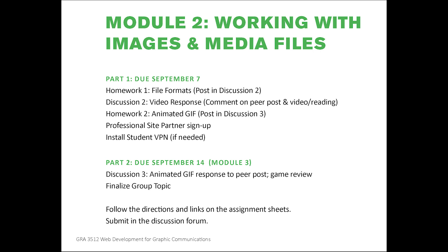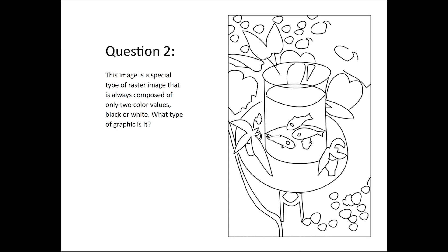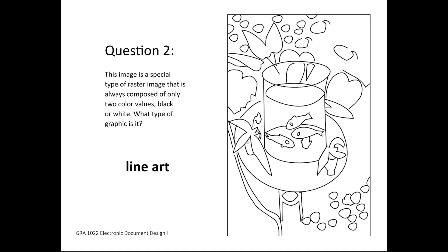First, I want to talk a little bit about image pixels and image size. This picture, for example, was an image I took with my smartphone, captured automatically at 72 PPI, making it a raster image — a pixel-based image. Those are the type of images you'll be using for most of your web pages. Even if it looks like vector art, if it's made up of pixels, it is raster, such as much of the line art available in free libraries.